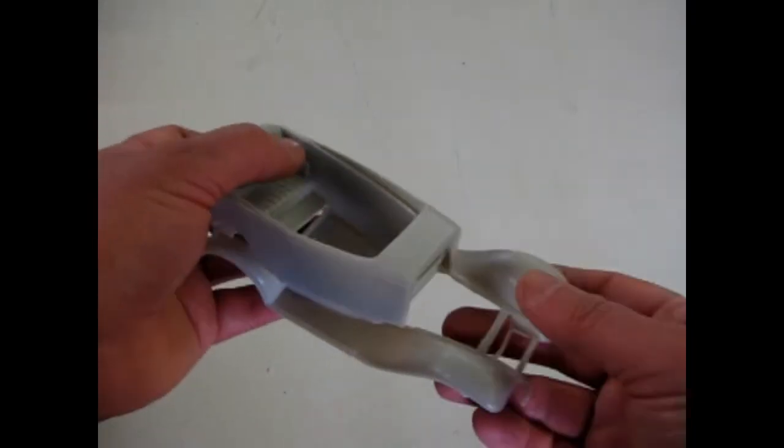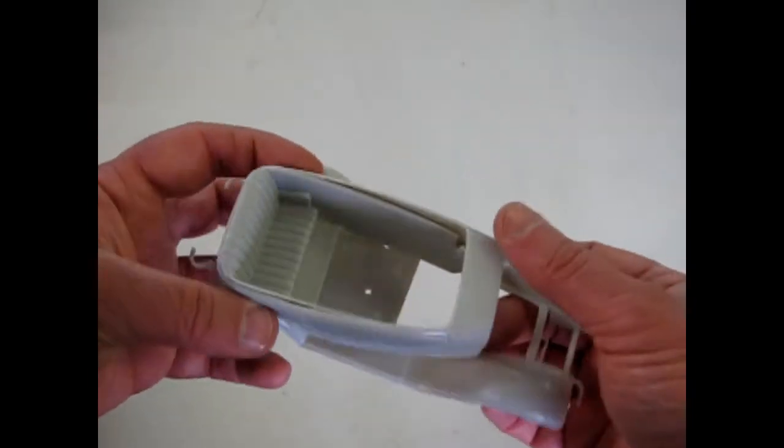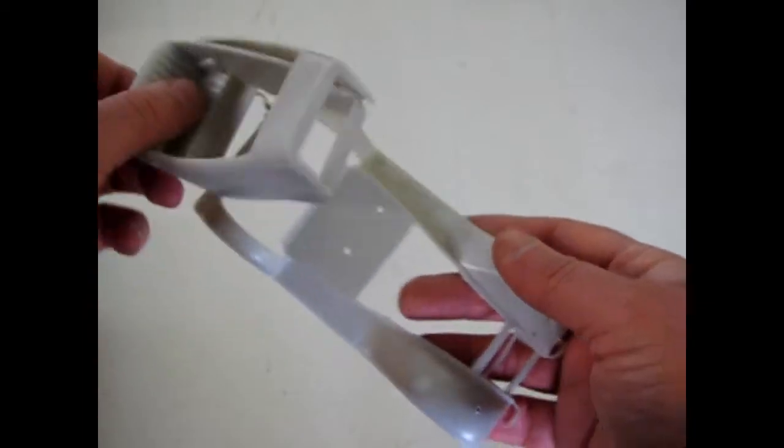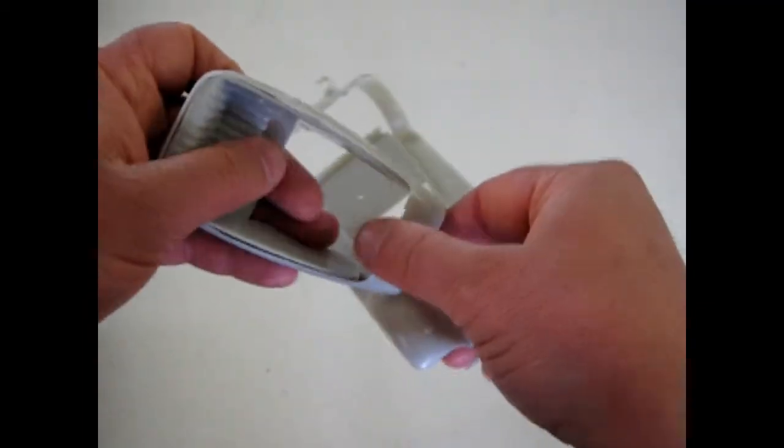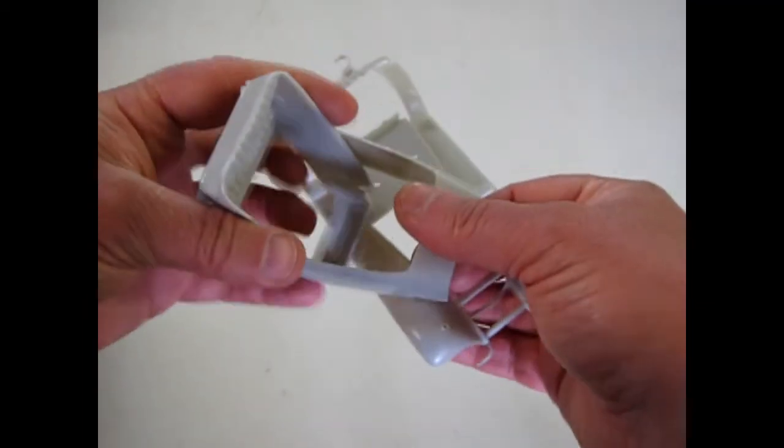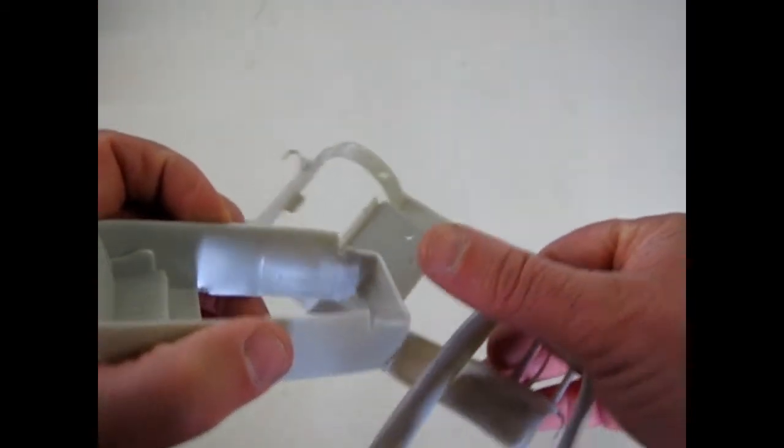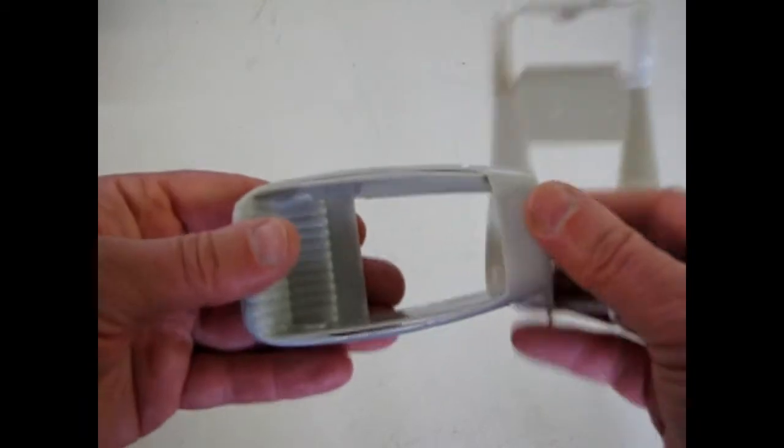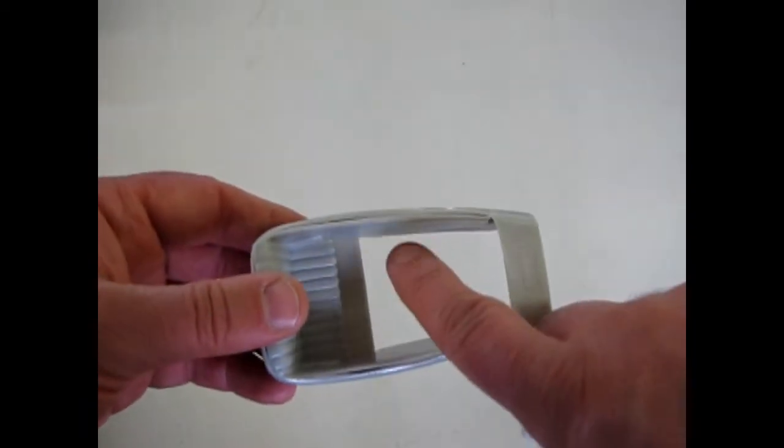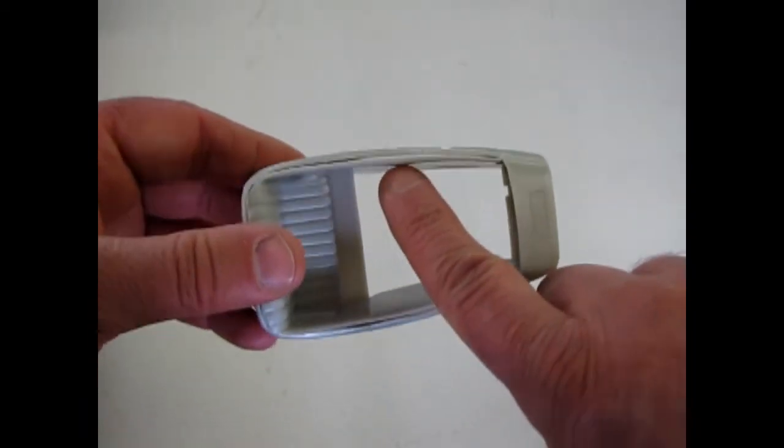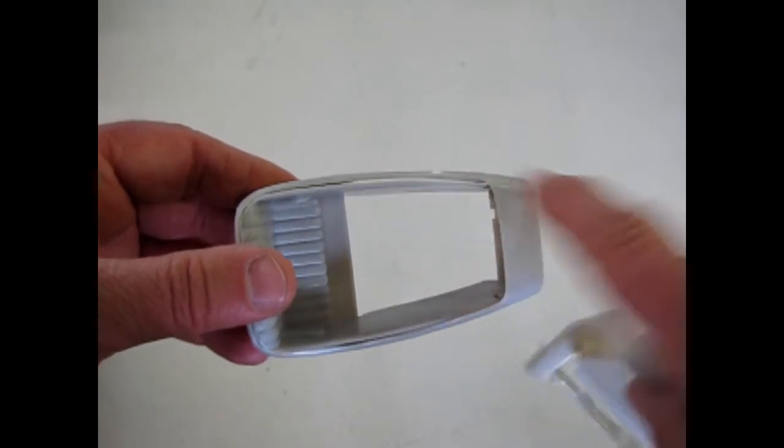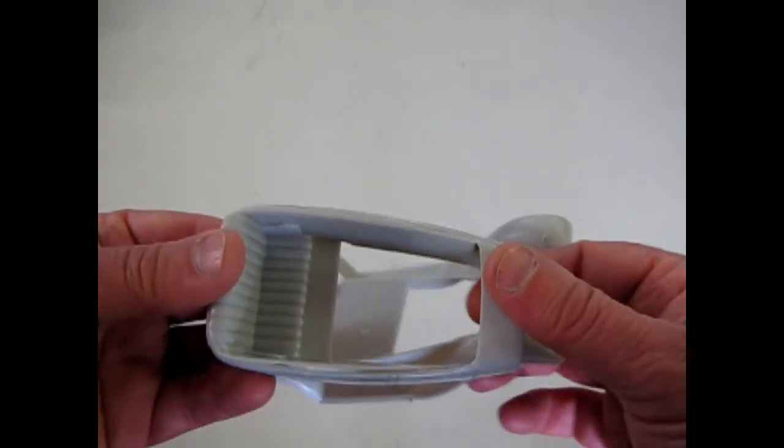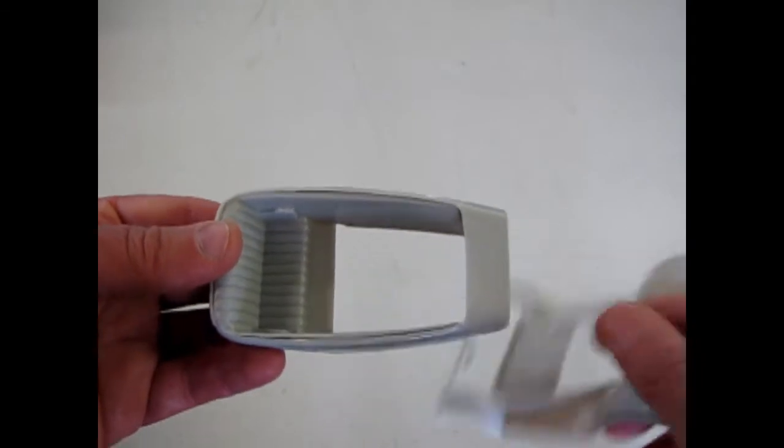And here we have our fenders, the Phaeton body, and the interior. The interior, of course, comes out, it's separate. And you can glue your dashboard in there. One thing to note though, the body is quite far away from the interior panel. So you would need to fill that with some filler or use some evergreen strip.